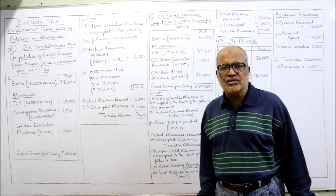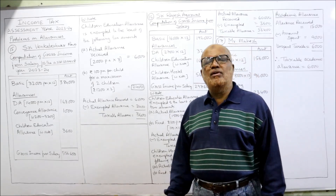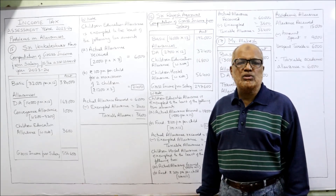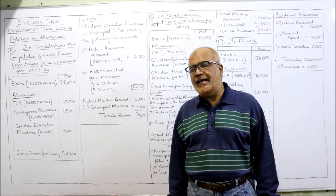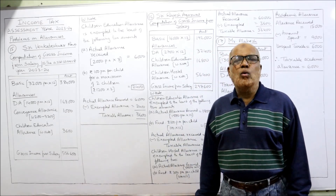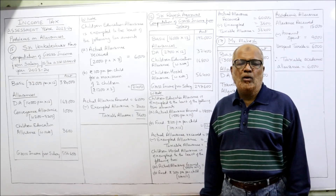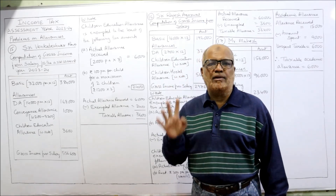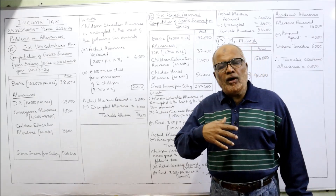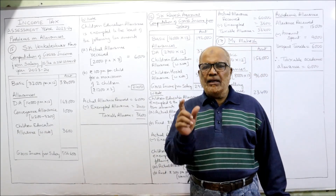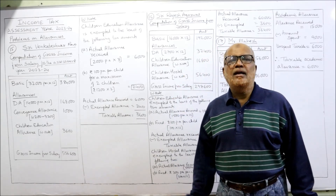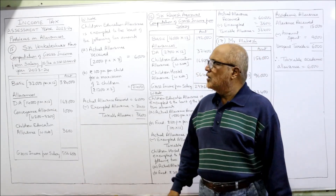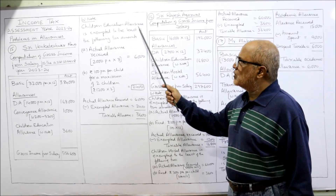Now regarding children education allowance — this is the first time we are covering this allowance. The Income Tax Act says that children education allowance given by the employer to the employee is exempted to the least of the following two amounts: actual education allowance received, or rupees 100 per month (i.e., 1,200 per annum) per child, for a maximum of two children. That is the ceiling given.